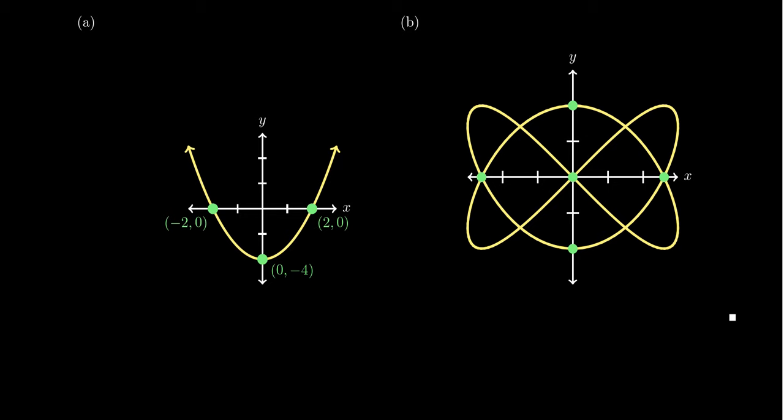If you look at this first graph A, which is an example of a parabola, we can very quickly see the x-intercepts. The x-intercepts are those points on the graph that intersect the x-axis, specifically the x-coordinates of these intersection points. So our x-intercepts here are x equals negative two and two.